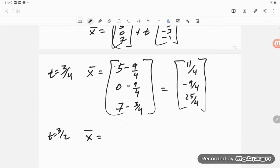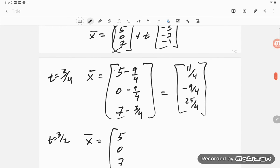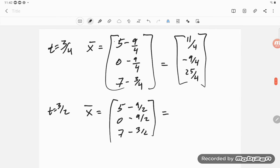And we get x is equal to our 5, 0, 7, and 3/2 times negative 3 is 9/2, so minus 9/2, minus 9/2, minus 3/2.